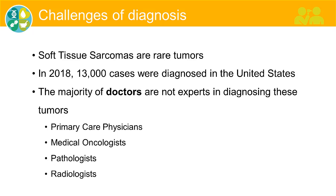One of the biggest challenges is that most doctors who encounter a sarcoma, unless they're at a specialty center, really don't have experience or have even seen a patient with this. Your primary care physician, if you come in with a lump, the most common thing they see is a lipoma, so they think it's a lipoma. A medical oncologist who doesn't specialize will see very few cases in their lifetime. Pathologists find sarcomas among the most complex tumors to diagnose, partially because there are so many different types. And for radiologists, because they are so uncommon, most don't have experience looking at films or radiographs of these tumors.